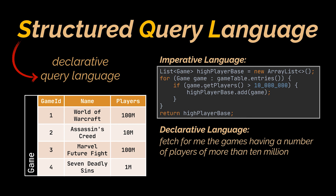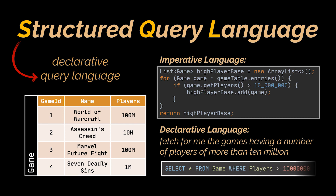Or in SQL: SELECT * FROM the game table WHERE the players column has a value bigger than 10 million. Here the DBMS will take this query, figure it out, and return to me the results.